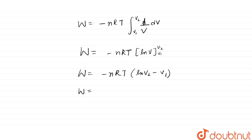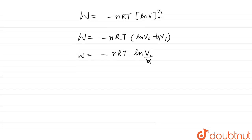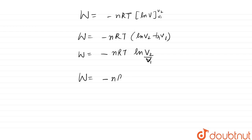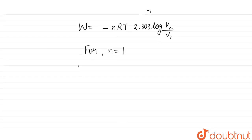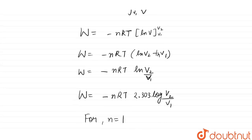So work done equals minus nRT ln(V2/V1). Converting from natural log to base-10 log: work done equals minus nRT × 2.303 × log(V2/V1). For n = 1 mole, work done in reversible isothermal expansion equals minus 2.303RT log(V2/V1).